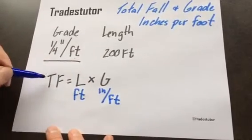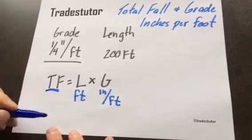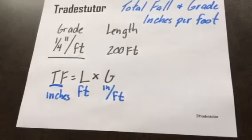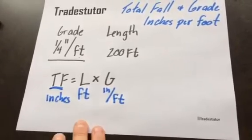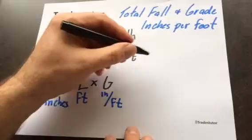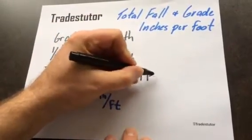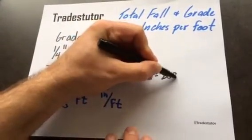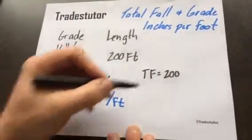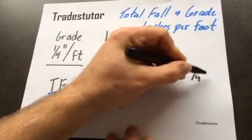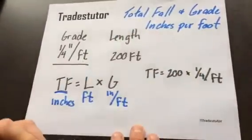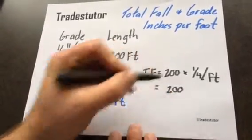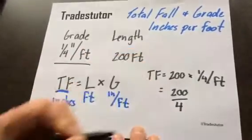So if we go and plug the numbers in, we'll come over here. We'll go total fall equals length, which is 200 feet, times the grade, which is quarter inch per foot.